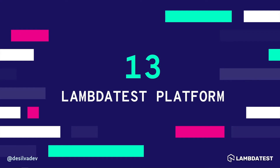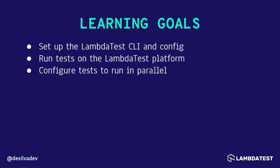Welcome back. In this final video, we're going to go over all of the different things that you can do using the LambdaTest platform to make your tests more scalable. The goals for this video are to set up the LambdaTest CLI and config, making sure that you've got the command line interface set up on your local machine, and then go over the various parts of the configuration needed to run these tests on the LambdaTest platform. We'll then run those tests on the LambdaTest platform and check out the dashboard and lots of cool features to see how your tests are performing.